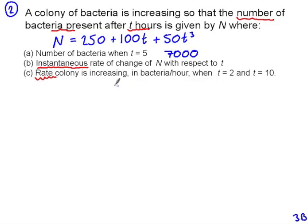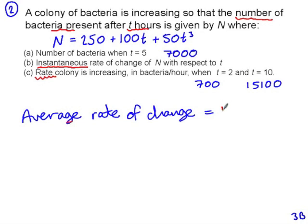So another example would be, earlier we worked out the rate that the colony was increasing in bacteria per hour, when T equals 2 and when T equals 10, and it was 700 bacteria per hour after 2 hours and 15,100 bacteria per hour after 10 hours. So to find the average rate of change between T equals 2 and T equals 10, we need to compare the number of bacteria after 10 hours and the number of bacteria after 2 hours and divide that by the time difference, which in this case is 8 hours.